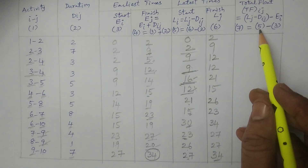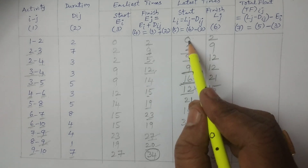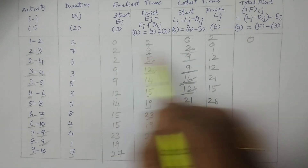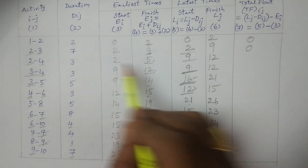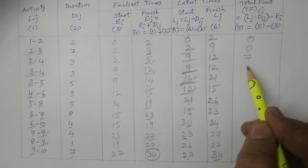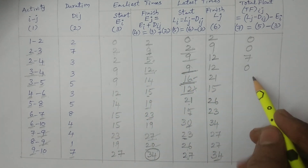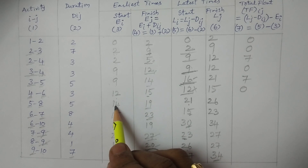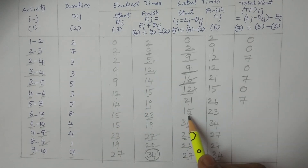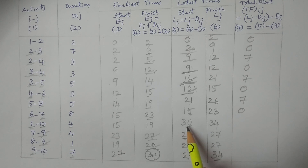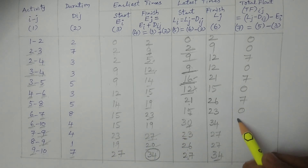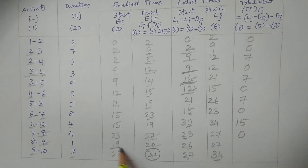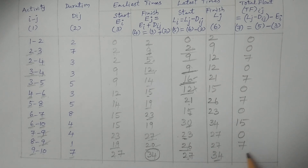Now total float — simple subtraction of column 5 minus column 3. Results: 0 minus 0 equals 0; 2 minus 2 equals 0; 9 minus 2 equals 7; 9 minus 9 equals 0; 16 minus 9 equals 7; 12 minus 12 equals 0; 21 minus 14 equals 7; 15 minus 15 equals 0; 30 minus 15 equals 15; 23 minus 23 equals 0; 26 minus 19 equals 7; 27 minus 27 equals 0.